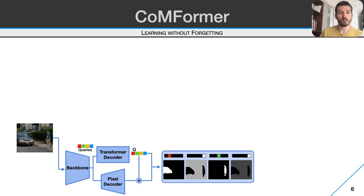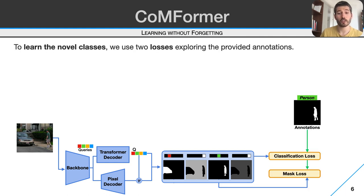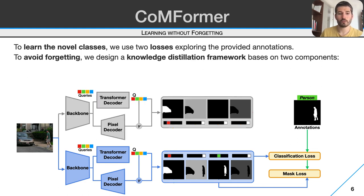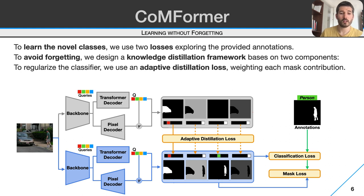On each training step, we train the model on novel classes using the Mask2Former procedure. First, we match predictions with annotations using the Hungarian algorithm. Then, we apply a cross-entropy loss on each output classification segment, and a binary cross-entropy loss on the matched masks. To learn without forgetting, Conformer employs a knowledge distillation framework. At the beginning of each training step, we clone and freeze the network, using the copy as a teacher. Since forgetting mostly occurs in classification, we design an adaptive distillation loss that forces the classification output to be consistent with the teacher. Each segment's contribution is weighted based on the information it contains, avoiding forcing the model to mimic segments predicted as 'no object' while giving more weight to the others.